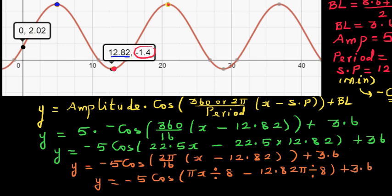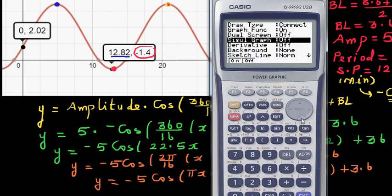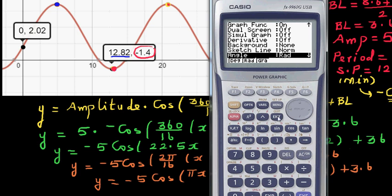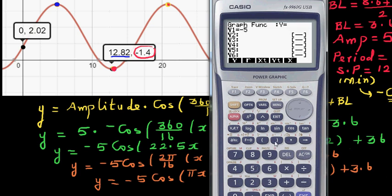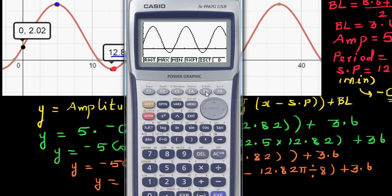You'll get the same equation, but before we graph it, we need to change the calculator into radians mode. Delete the previous entry, go to setup, change into radians first. Enter: minus 5 cosine, bracket, shift pi times x divided by 8, minus 12.82 shift pi divided by 8, close bracket, plus 3.6. It should give the same graph. G-Solve y-intercept, maximum, and minimum all check out.